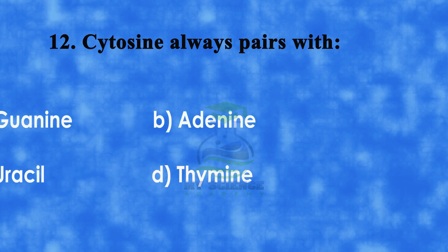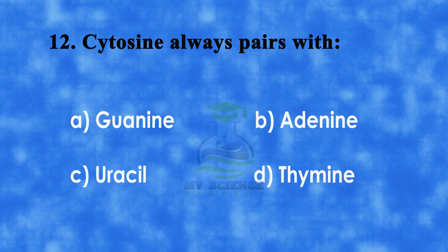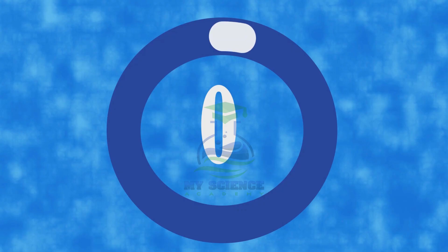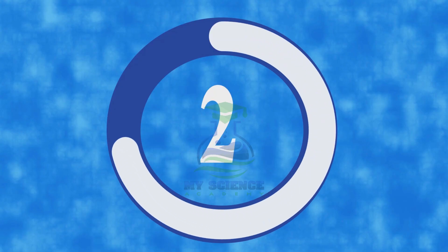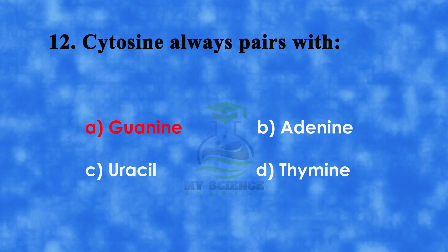Question 12: Cytosine always pairs with — A. Guanine, B. Adenine, C. Uracil, or D. Thymine. Correct answer is A. Guanine.